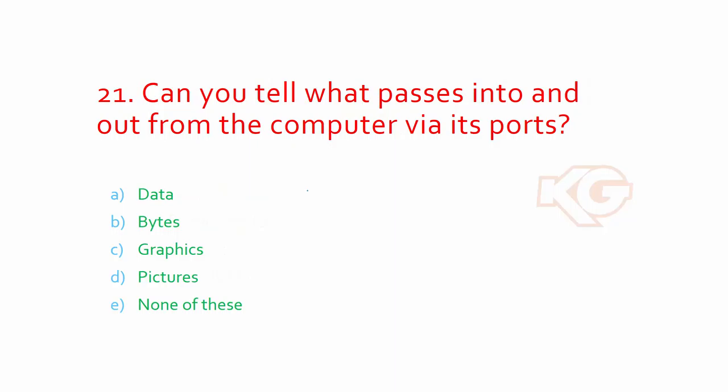What passes into and out from the computer via its ports? Is it data, bytes, graphics, or pictures? It cannot be graphics or pictures directly. Though you can see these things passing through one computer to another computer, indeed all this information is not directly sent as images but in terms of ones and zeros. It's all bytes. Data can also be in ones and zeros, so your answer should be bytes.